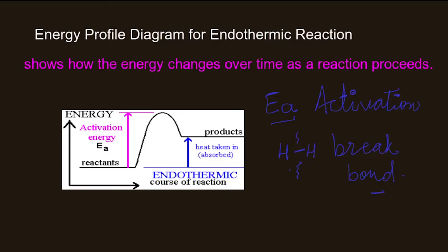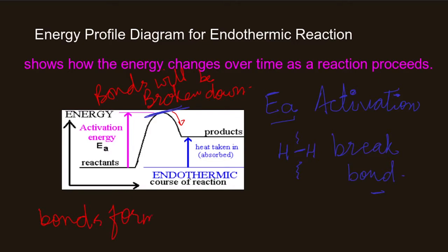Activation energy is the minimum energy required to start the reaction. At the peak of the diagram, all bonds will be broken down. After the breaking of bonds, new bonds will be formed. When new bonds are formed, bond formation is an exothermic process where heat energy is released.